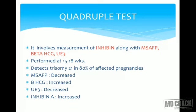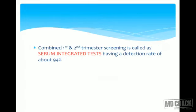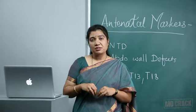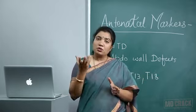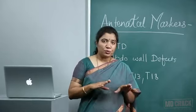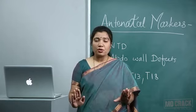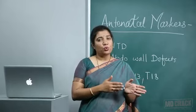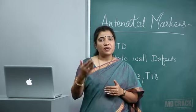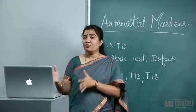The quadruple test involves measurement of inhibin A along with MSAFP, beta-hCG, and unconjugated estriol, performed at 15 to 18 weeks. It detects trisomy 21 in 80% of affected pregnancies. In trisomy: MSAFP decreased, beta-hCG increased, unconjugated estriol decreased, inhibin A increased. These tests can be used sequentially, or first and second trimester results can be integrated in the serum integrated test, where software calculates the combined risk. If the patient falls in high risk group, confirmatory tests such as amniocentesis or cord blood sampling are advised.